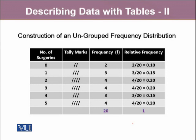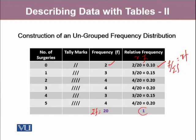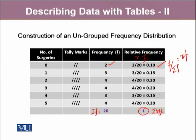Moreover, we can construct an ungrouped relative frequency distribution. We use the frequencies and divide them by the total — here, the current frequency is 2 and the total, denoted by sum of f, is 20. Two divided by 20 equals the relative frequency. Relative frequencies are denoted by rf, and the sum of all relative frequencies always equals one. They can also be converted into percentages: for example, there are 10% of days with zero surgeries, 20% with one surgery, 20% with three surgeries, 15% with four surgeries.